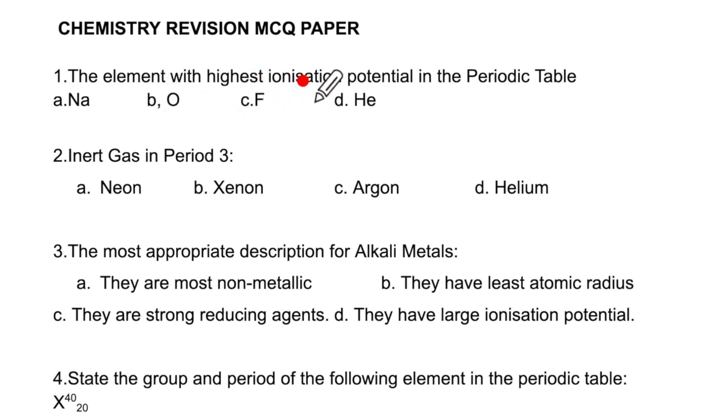Number one, the element with the highest ionization potential in the periodic table is helium. You need to know that by heart.